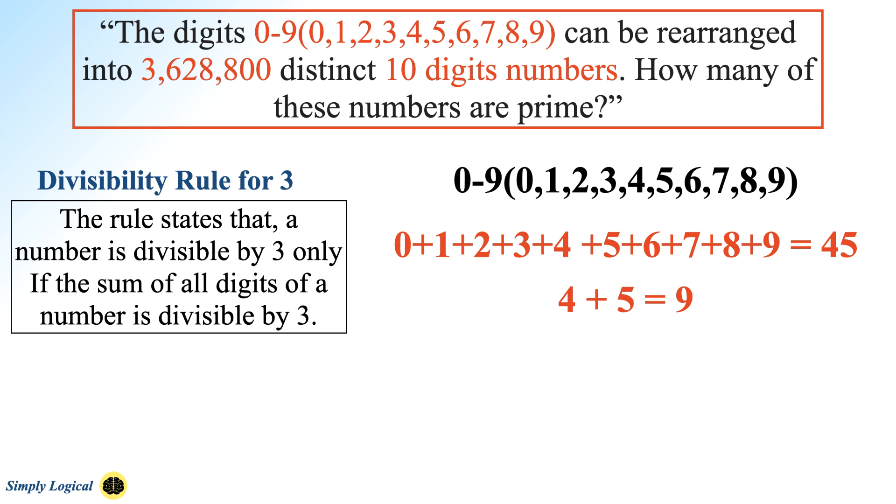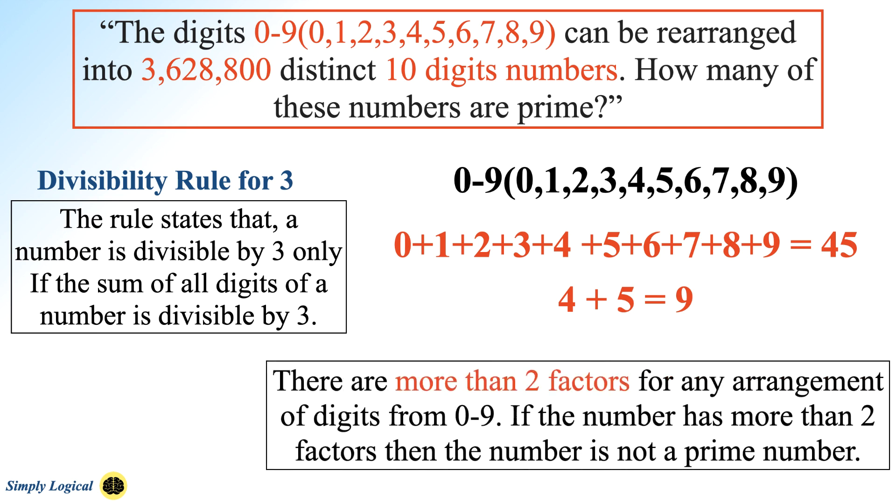Since 9 is divisible by 3, regardless of the arrangement of 10 digits from 0 to 9 in whatever way, the number is divisible by 3. Thus there are more than 2 factors for any arrangement of digits from 0 to 9. Now we know that if the number has more than 2 factors, then the number is not a prime number.